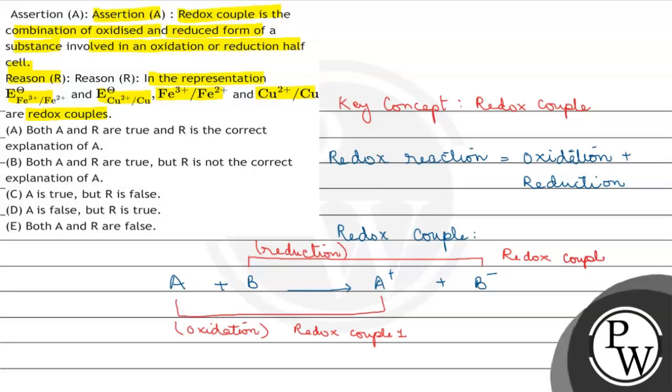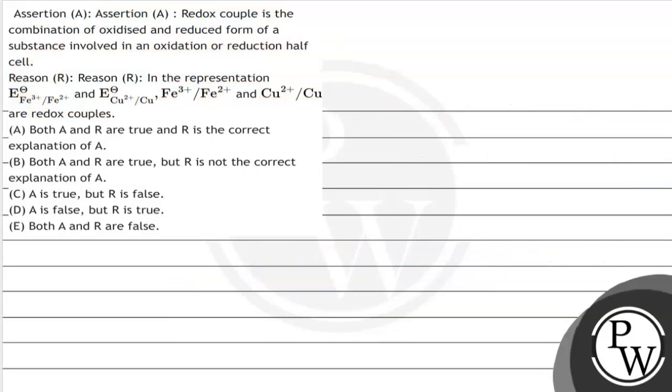So this is redox couple 2, that means assertion is true that redox couple is the combination of oxidized and reduced form of a substance involved in oxidation and reduction half cell.